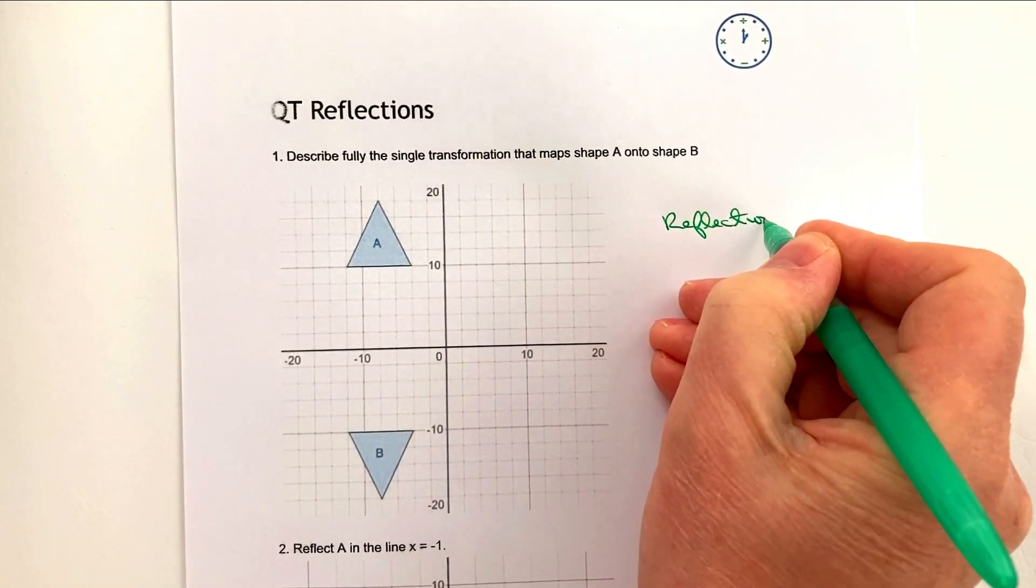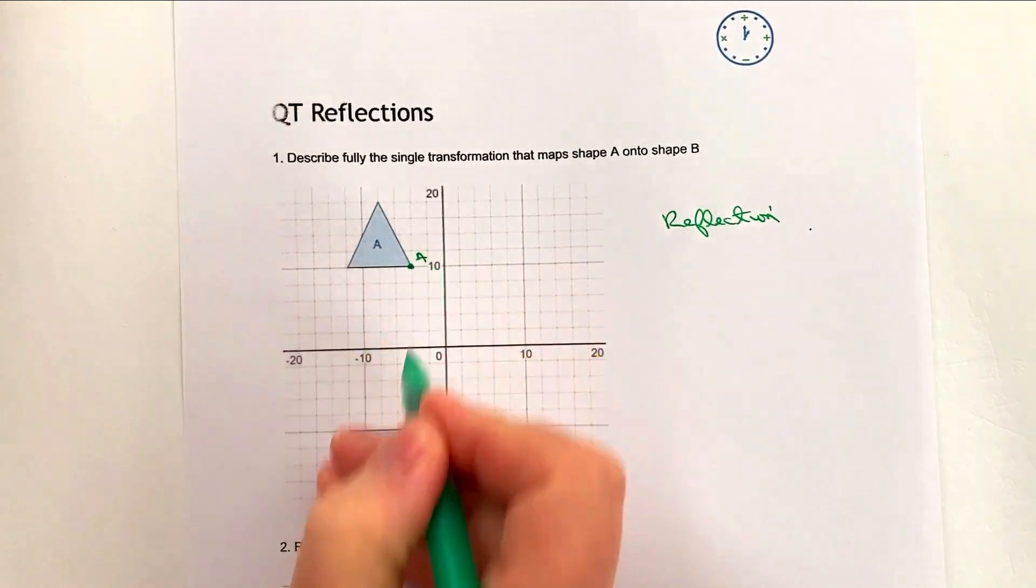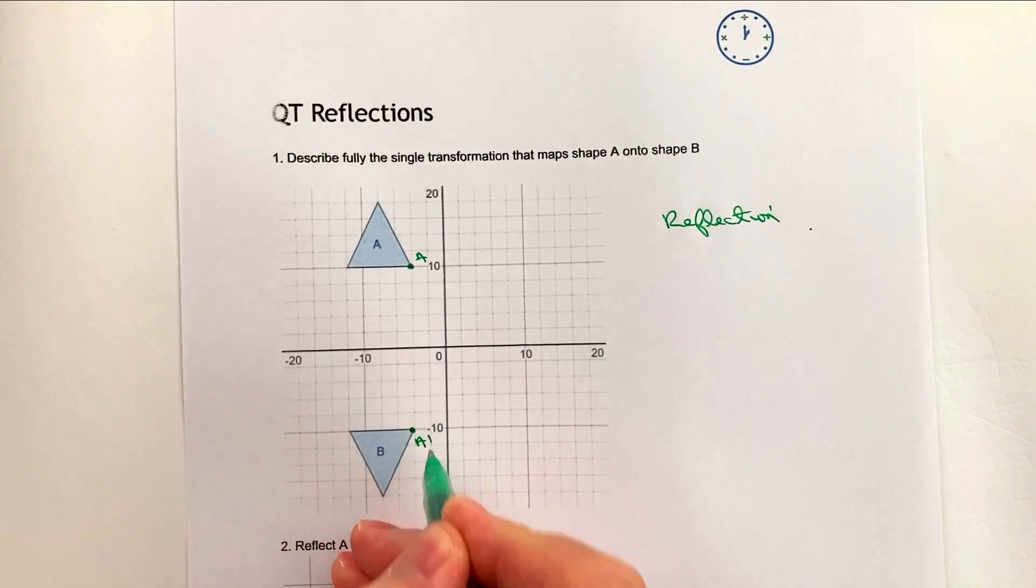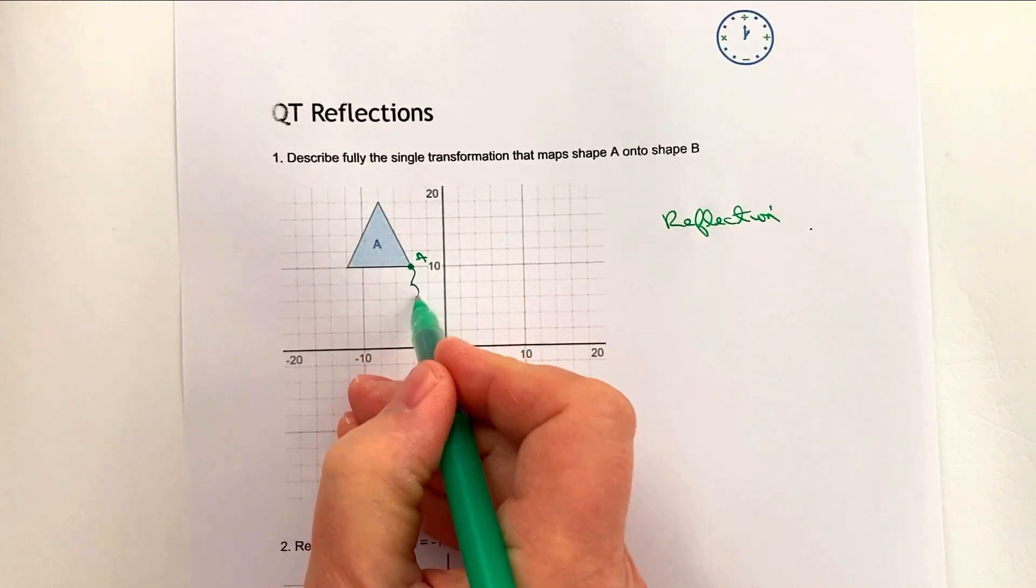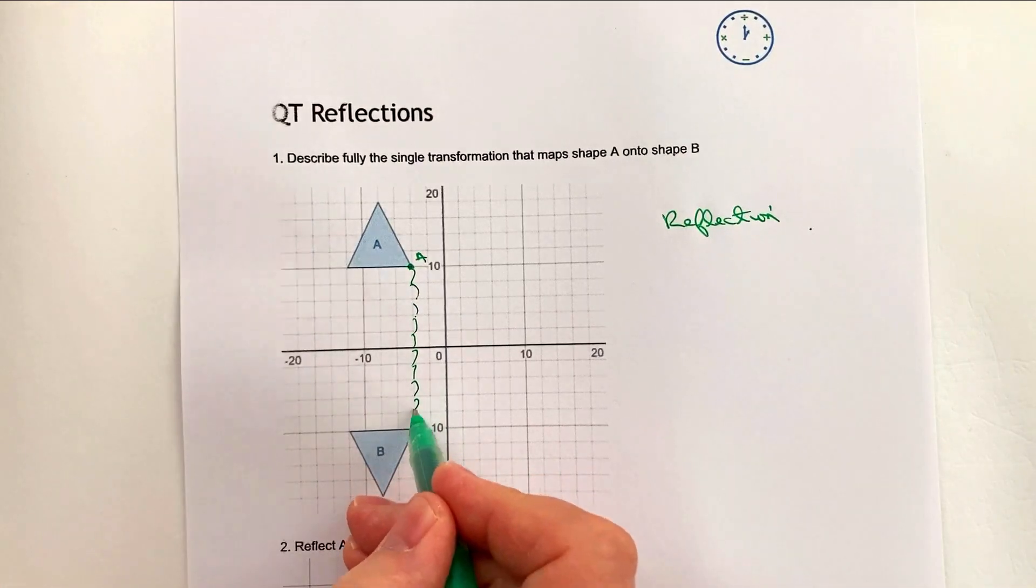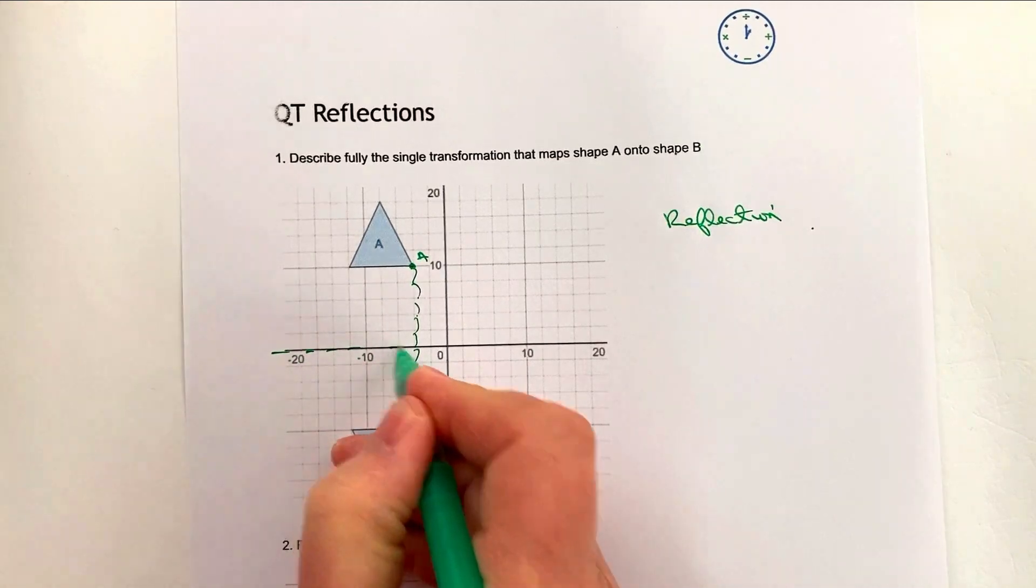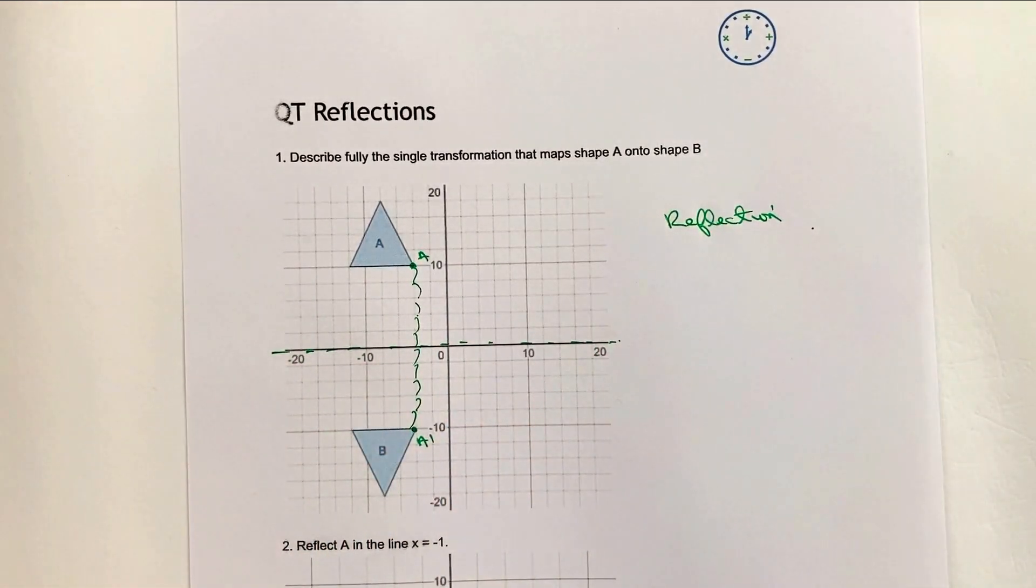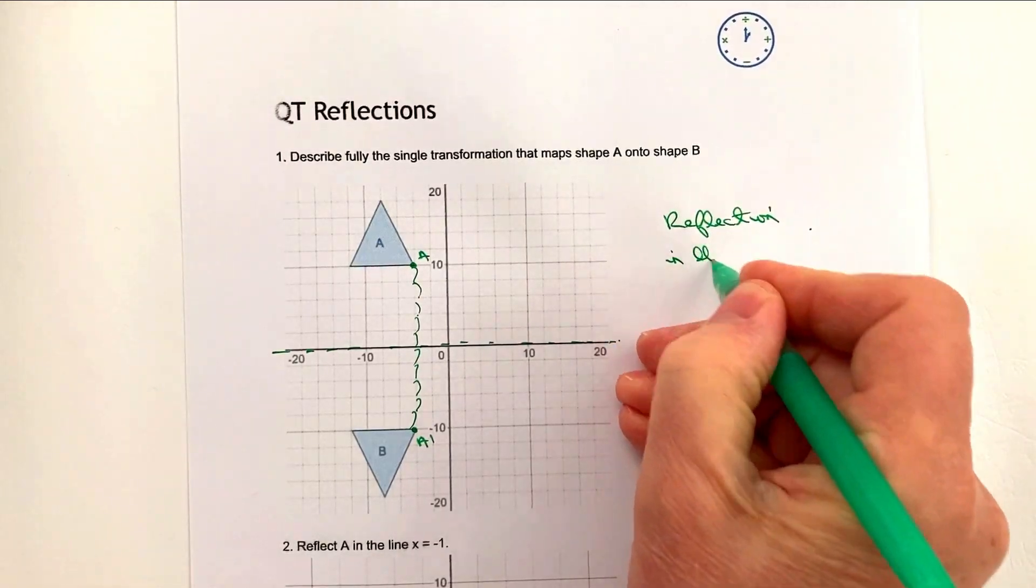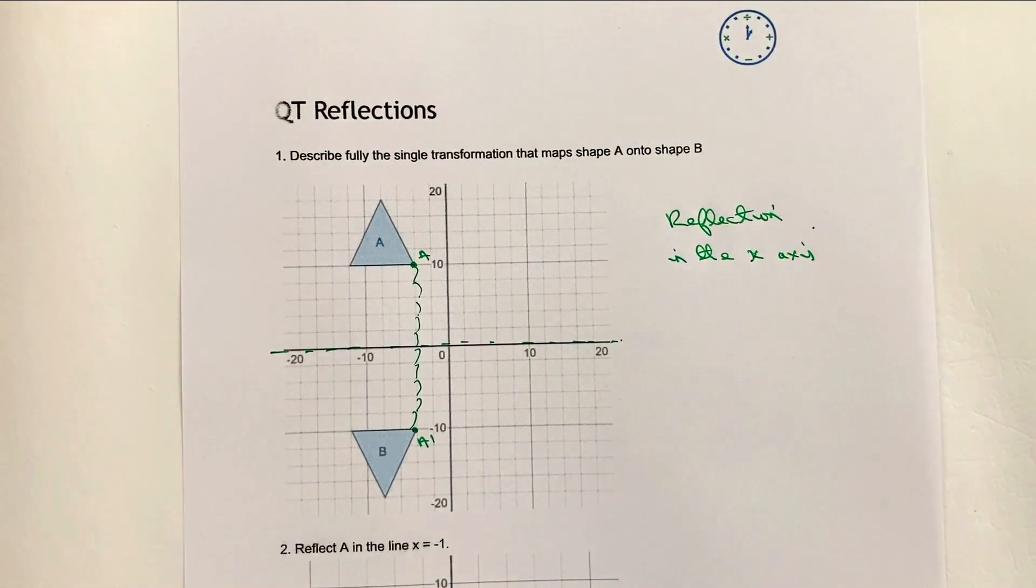Hopefully you can see that it is a reflection. We need to find out the mirror line or where it's reflected. Let's look at this particular point which is A and it's going to be reflected and end up here. It's going to reflect one, two, three, four, five, six, seven, eight, nine, ten. In other words, halfway along means that this one is the mirror line. So it's a reflection in the x-axis.